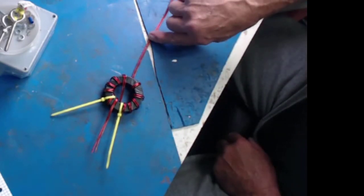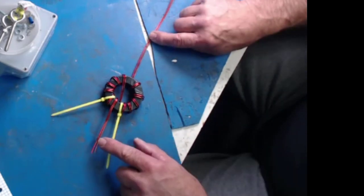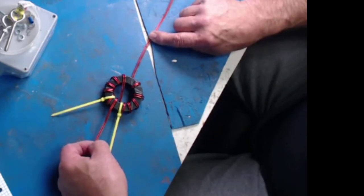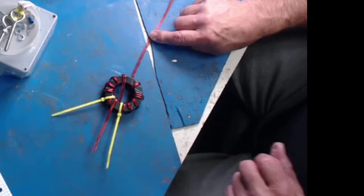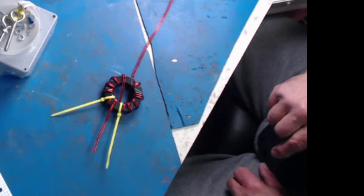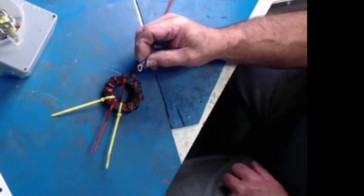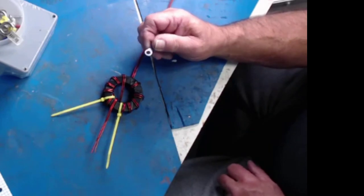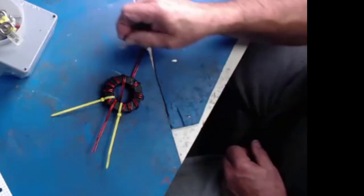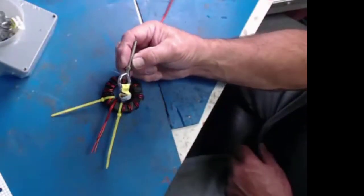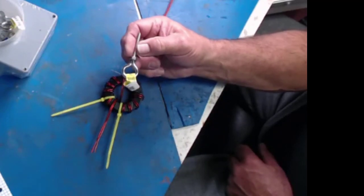We're going to trim this off right here because we don't need any more than that. The next step is to clean the ends up so that we can actually solder them and put on some ring connectors. We'll put on a ring connector like this on the two devices that we're going to use to attach the antenna to, which are these hooks.